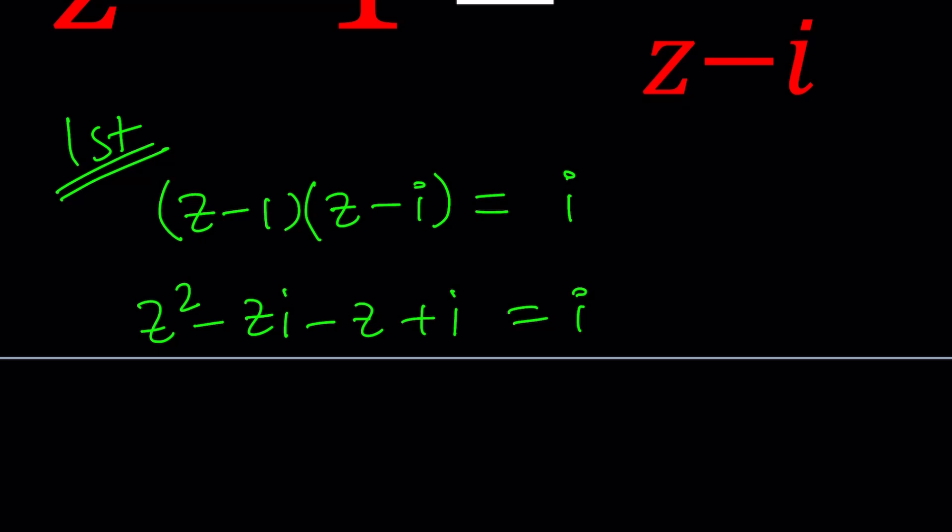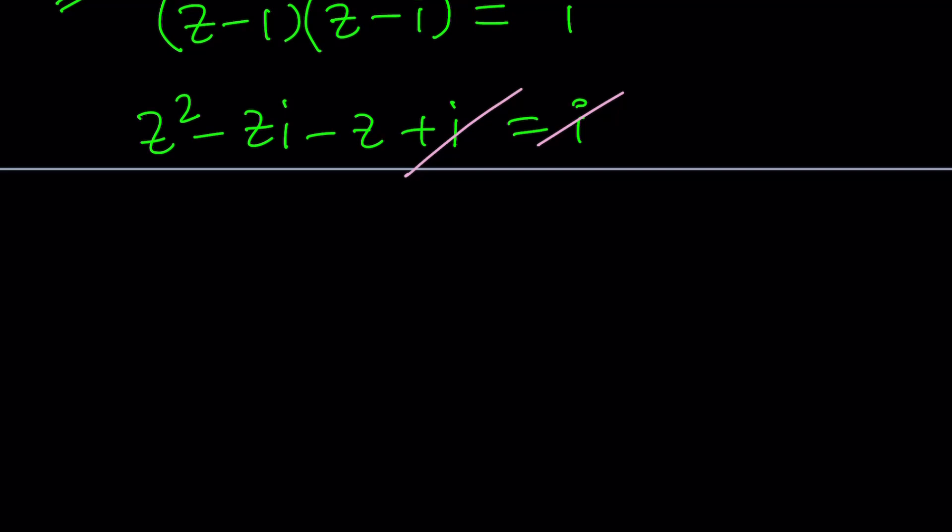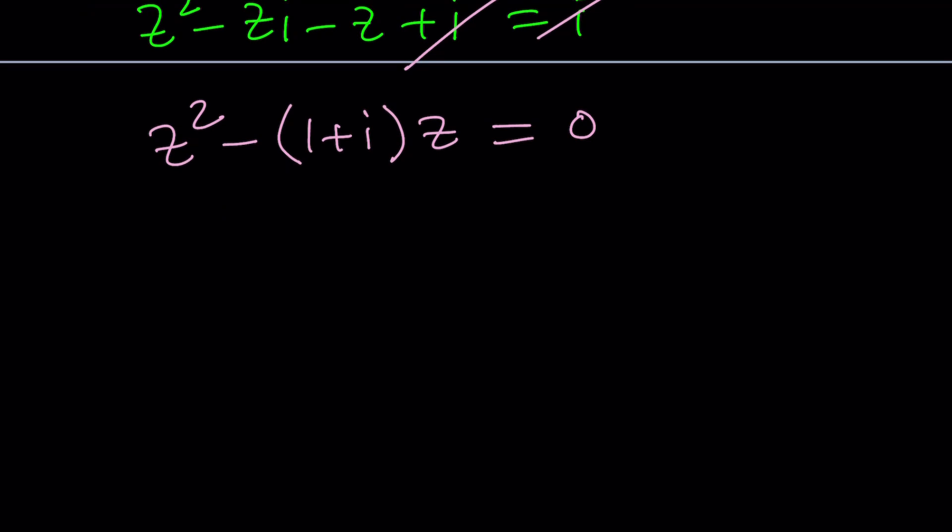How nice. i cancels out. Beautiful. And if it didn't, we would put everything on the same side, and we would get a quadratic equation. We're still going to get a quadratic equation, but it's going to be a lot easier to solve because it doesn't have a constant term. Make sense? So I can kind of write this as z squared minus the quantity 1 plus i z equals 0.